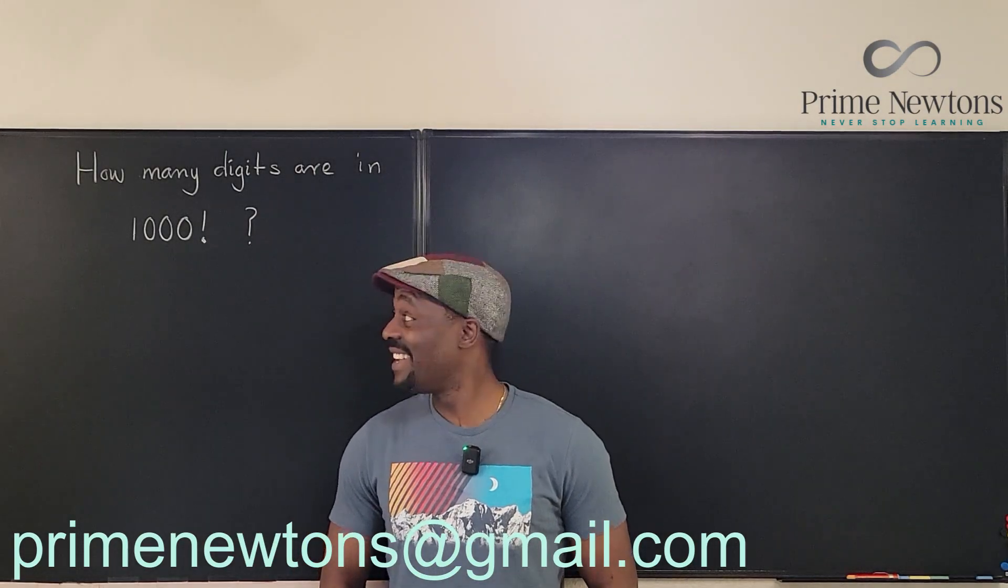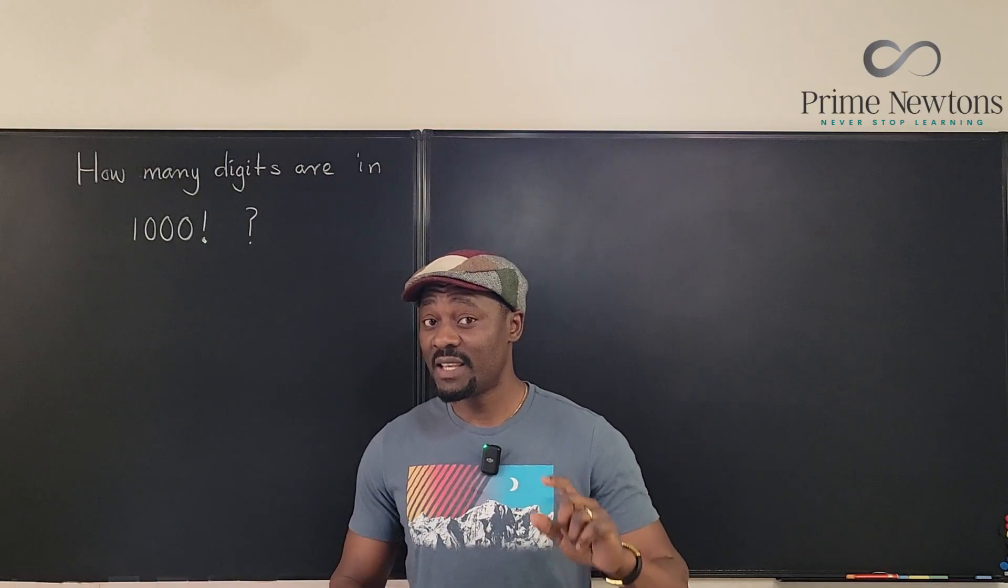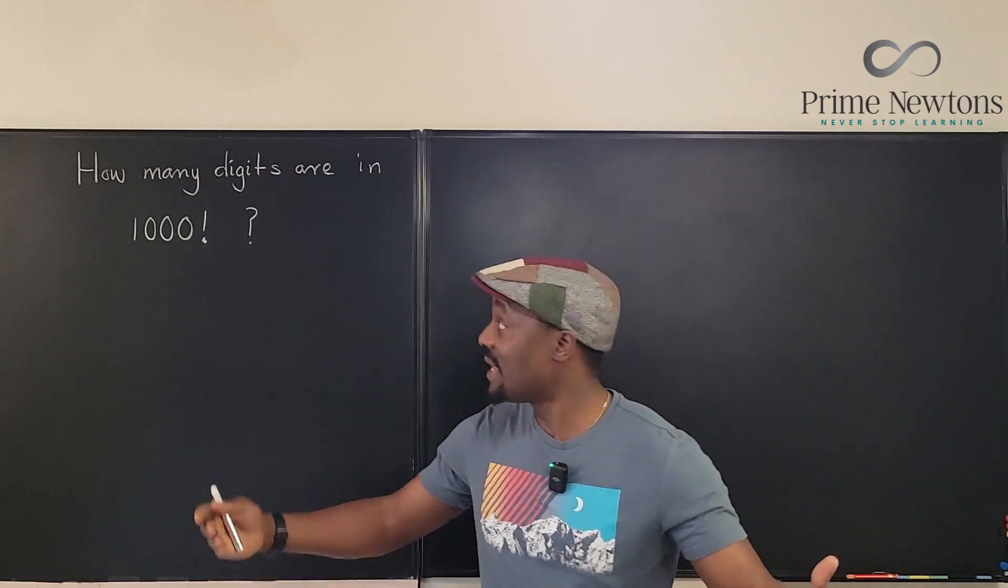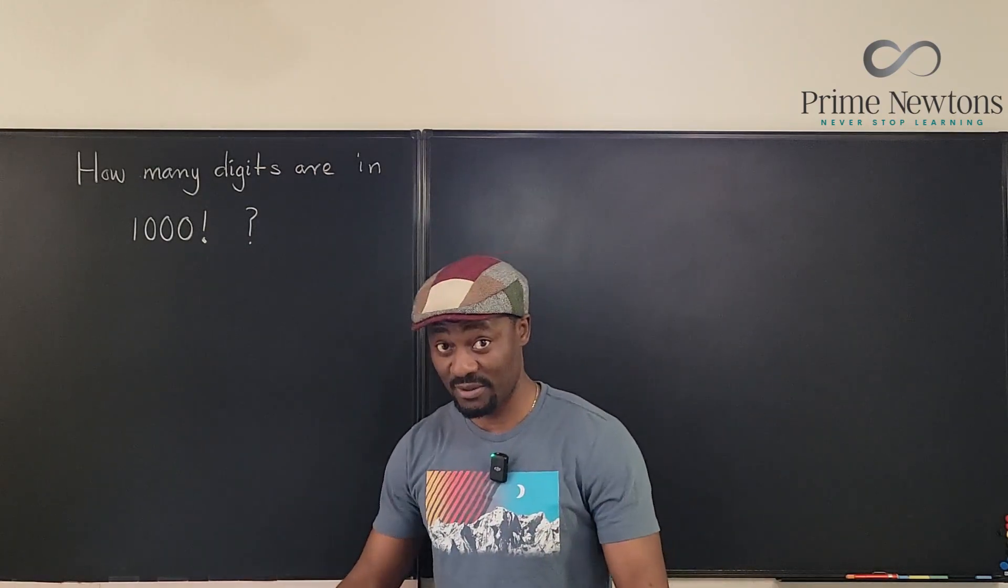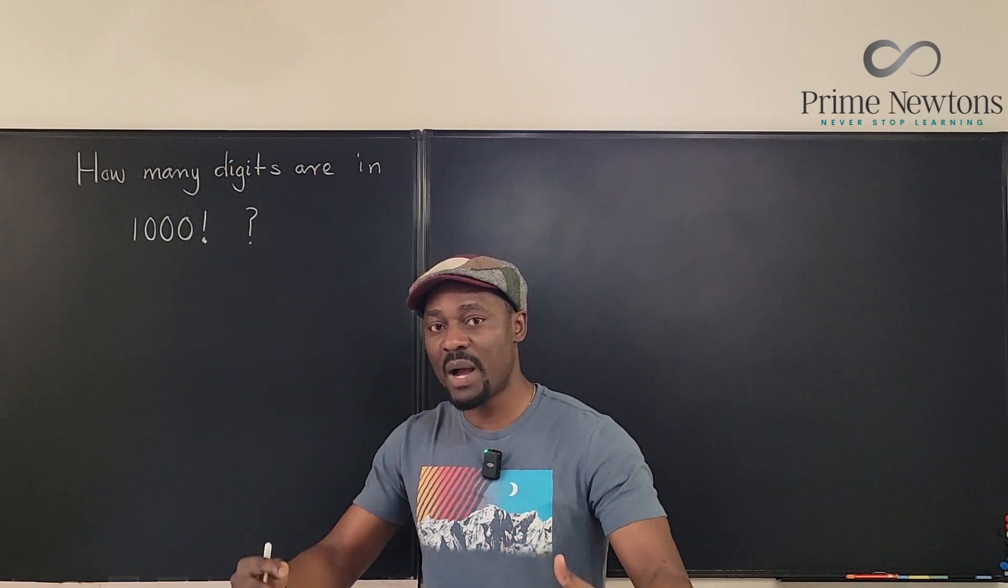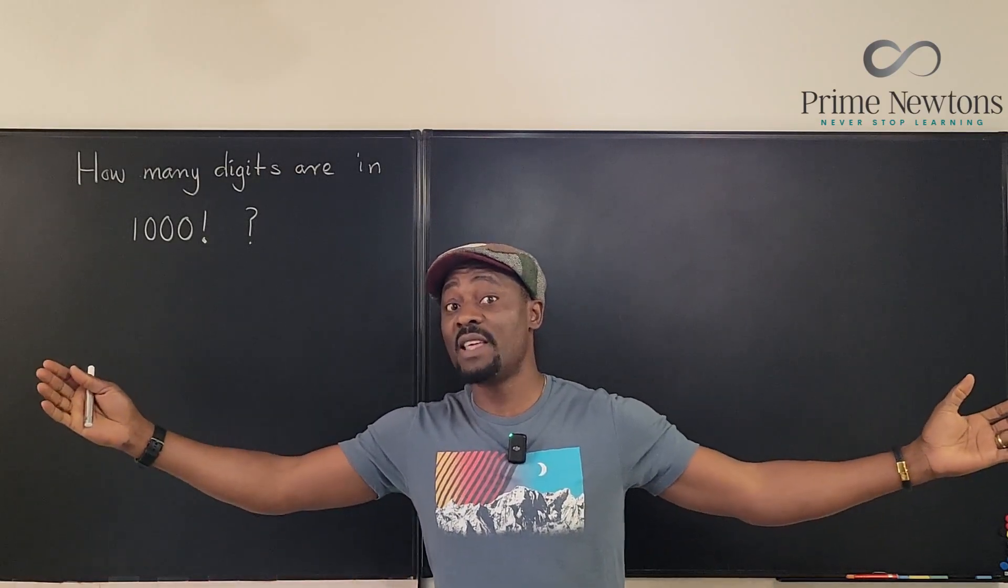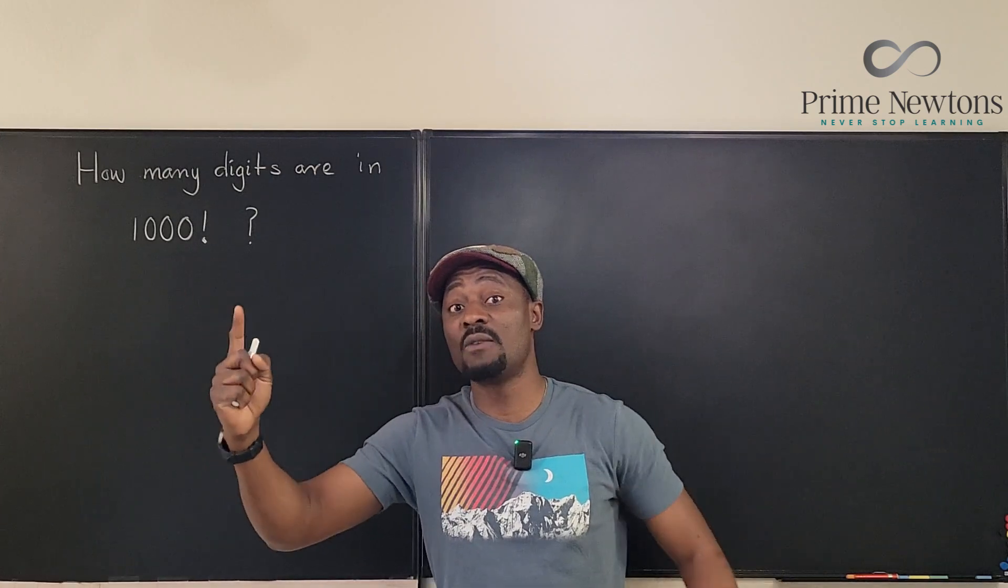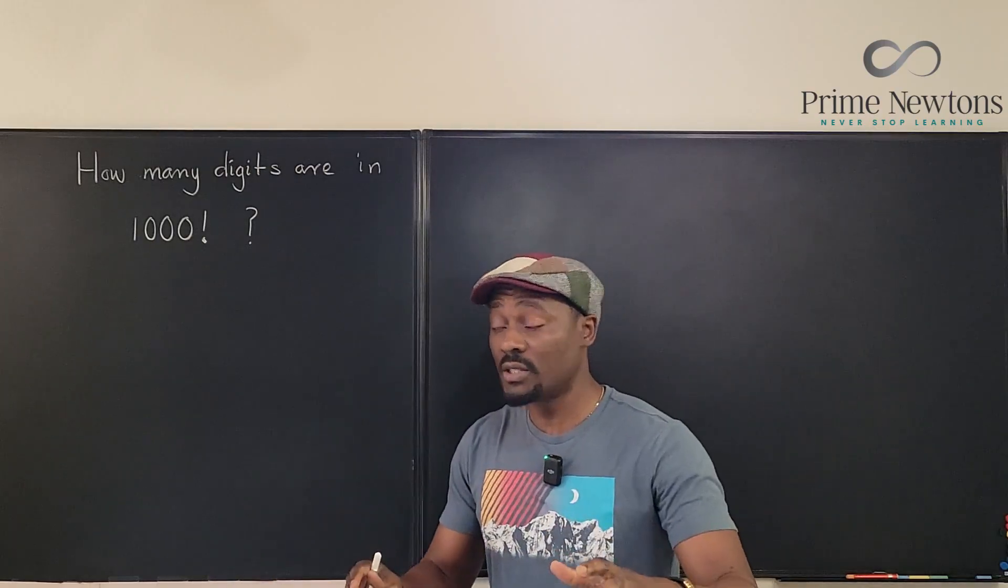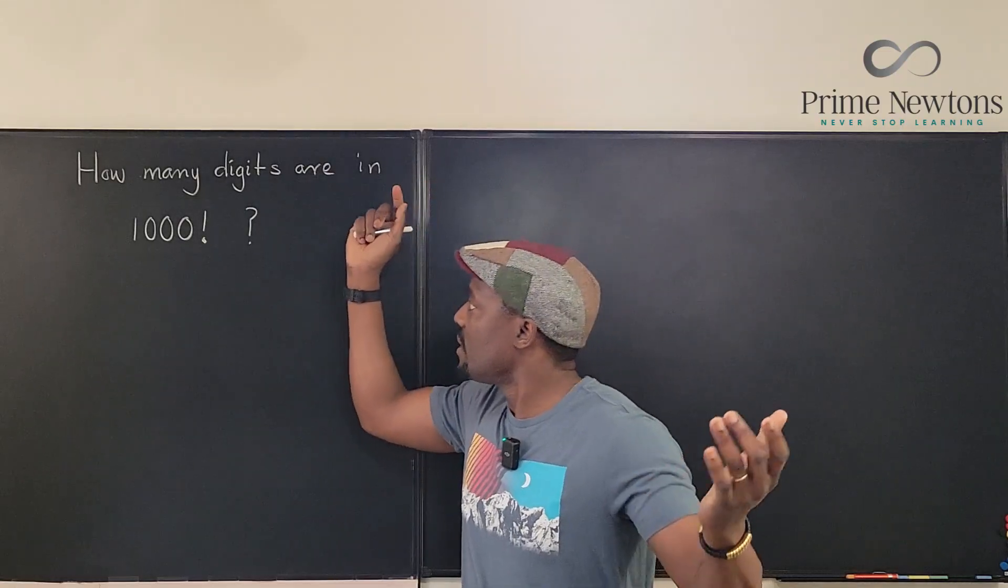Welcome to another video. We will make an attempt at knowing the number of digits in any factorial. The sample for today is 1000 factorial, which means we're going to multiply 1000 by 999 by 998, and we're going to keep going down until we get to 1. The answer we have, how many digits are we going to get? That's the mission. We're not just going to focus on 1000, we're going to do it for any value of any number.